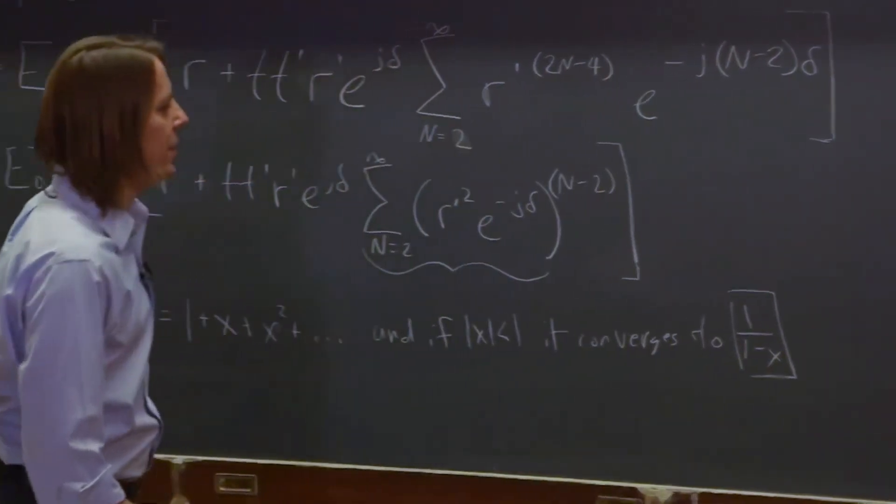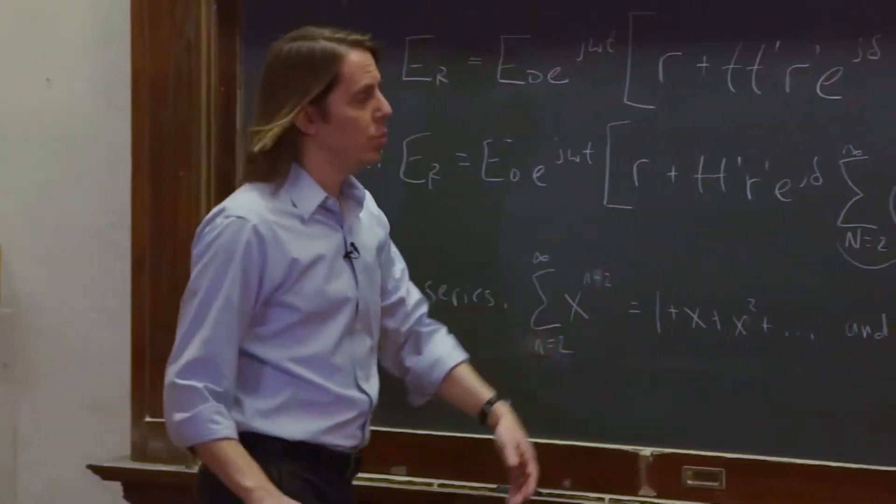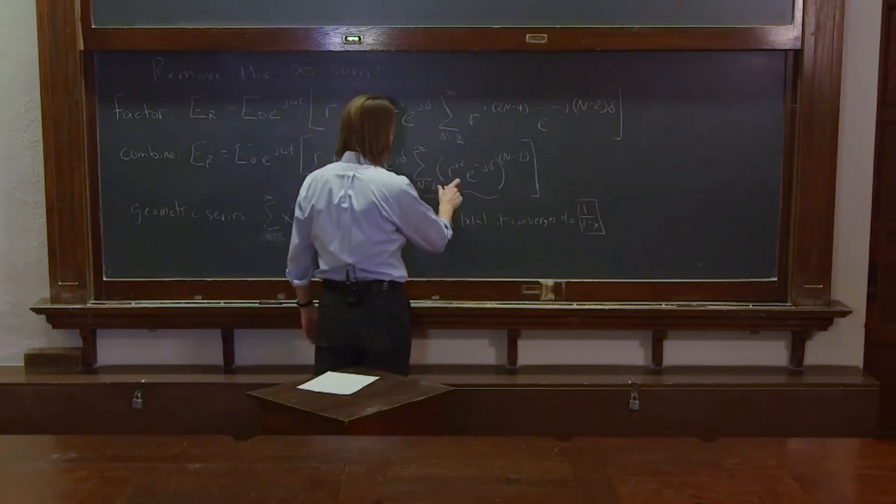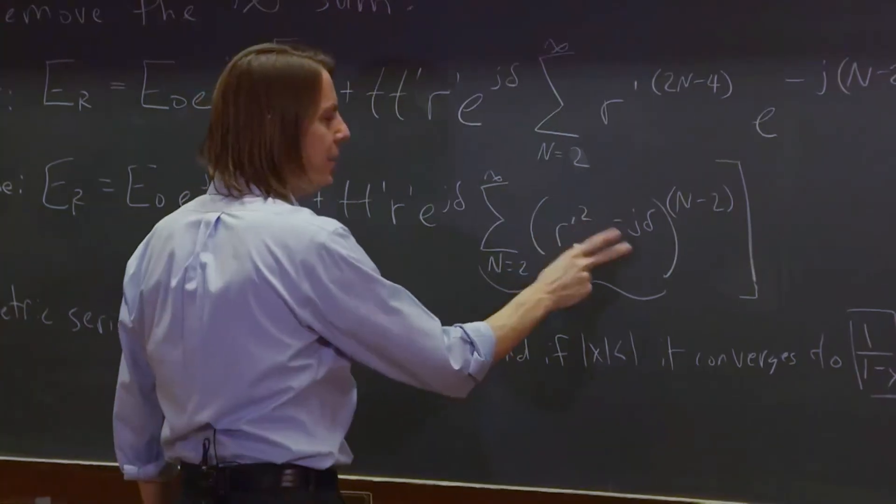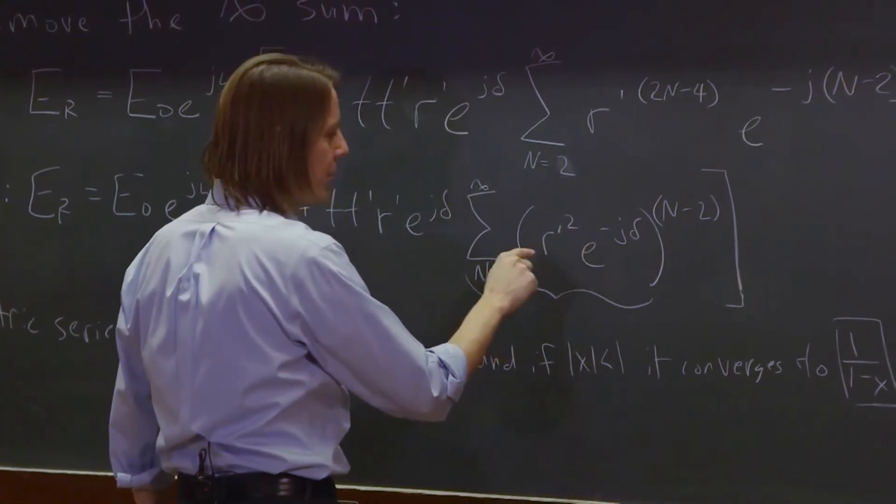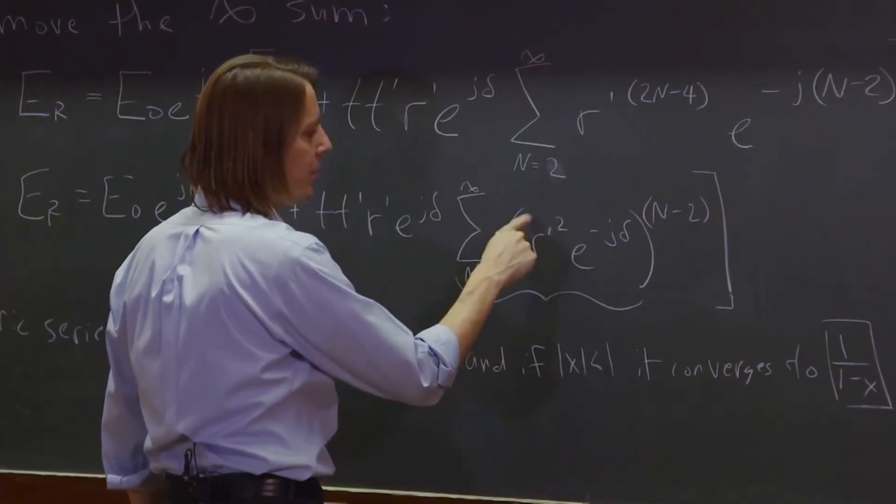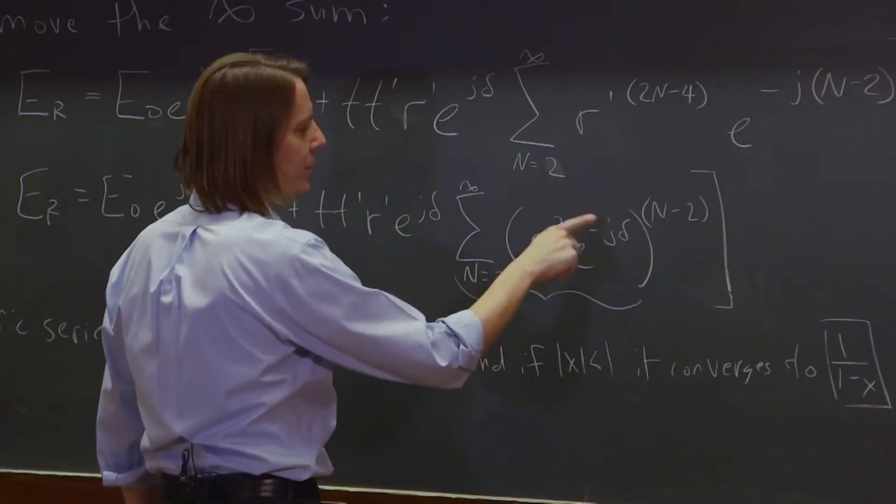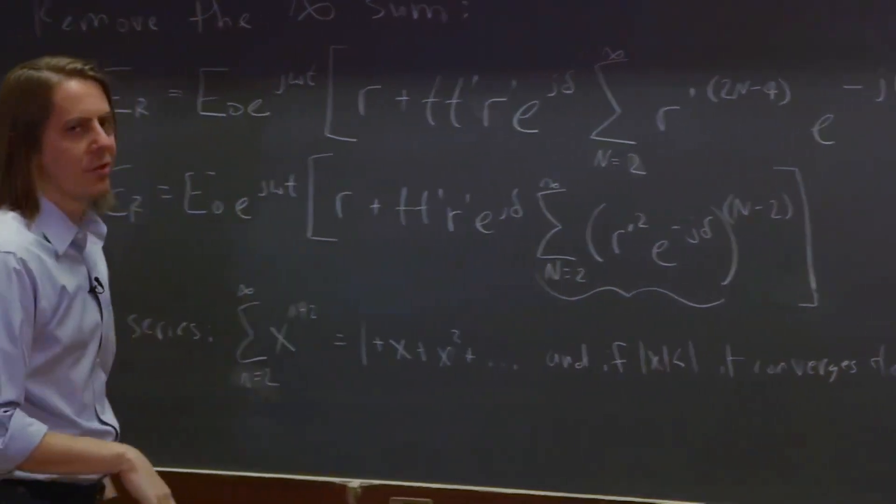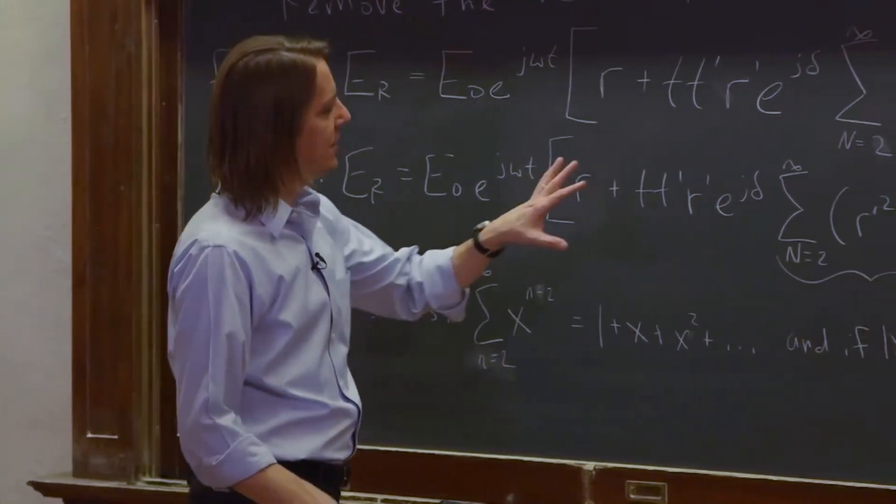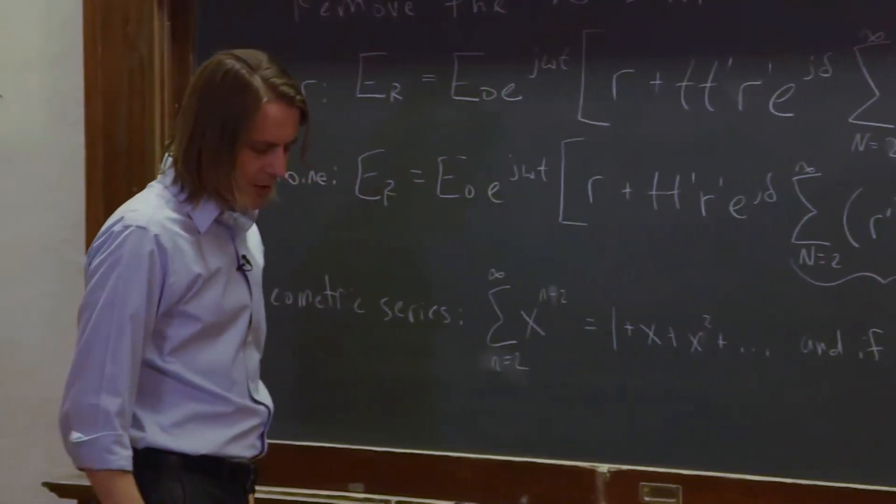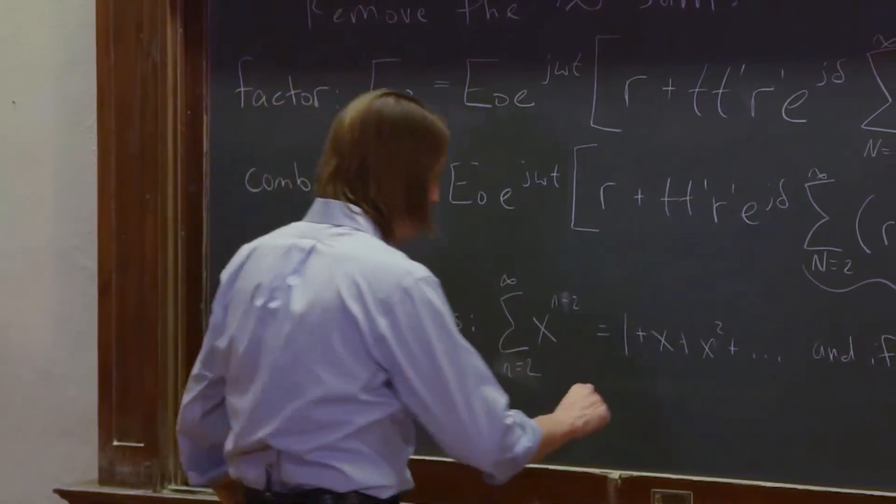So this is where we get rid of the infinite sum. We have a thing here. Remember, this is our X to the N minus 2 sum from 2 to infinity. And it does remain less than 1 because the reflection coefficient is always less than 1 and it's squared. And this always has to be less than 1 because it's basically a complex exponential. So it will remain less than 1. So we can replace this with that geometric thing. I'm completely out of room, but I can fit it down here.